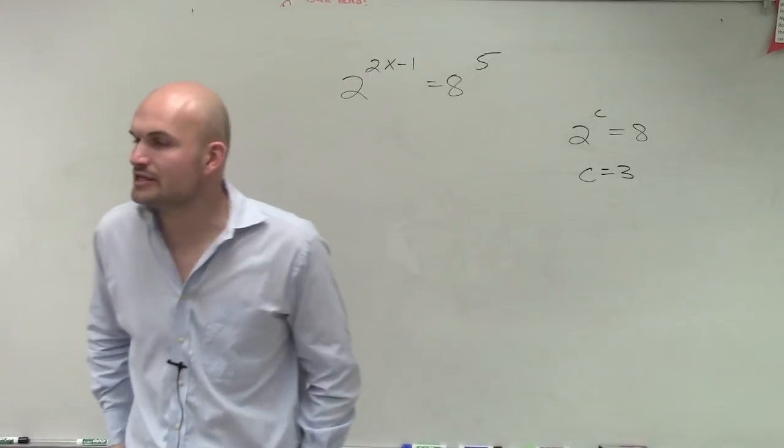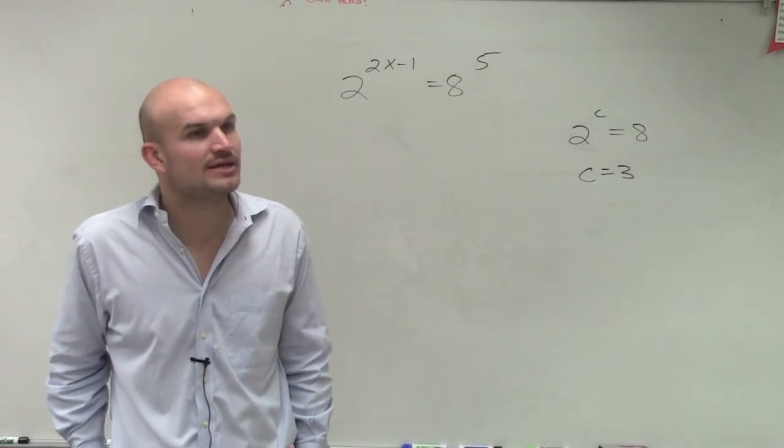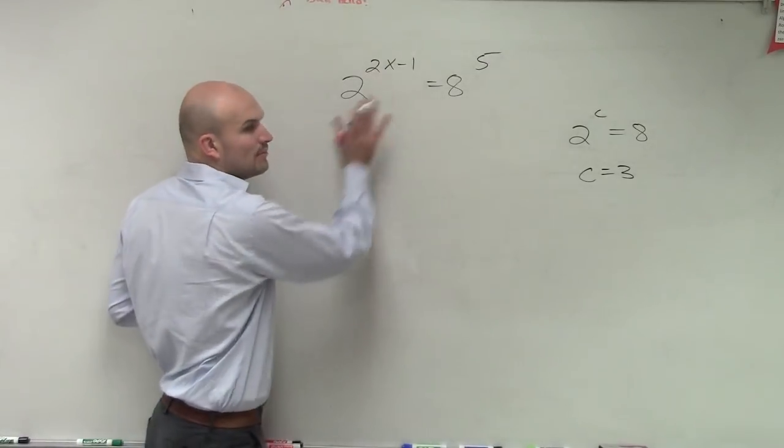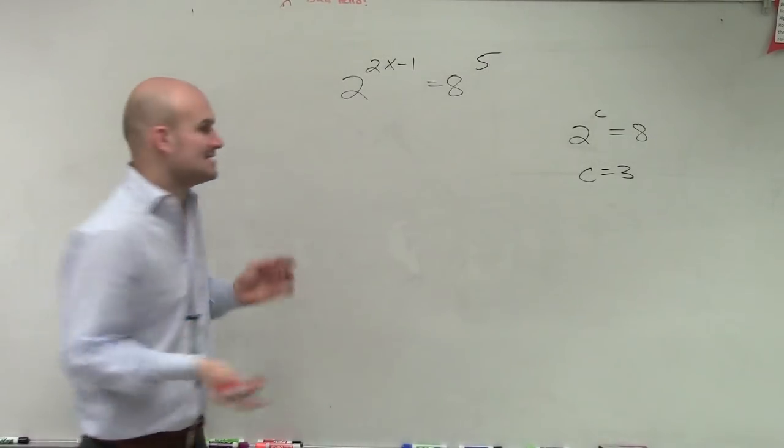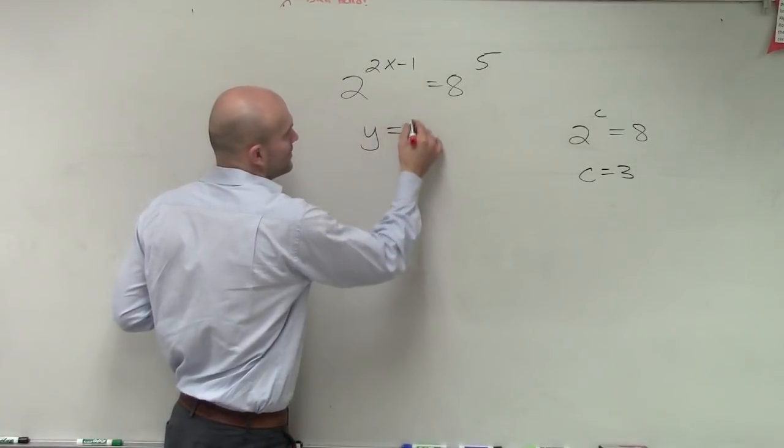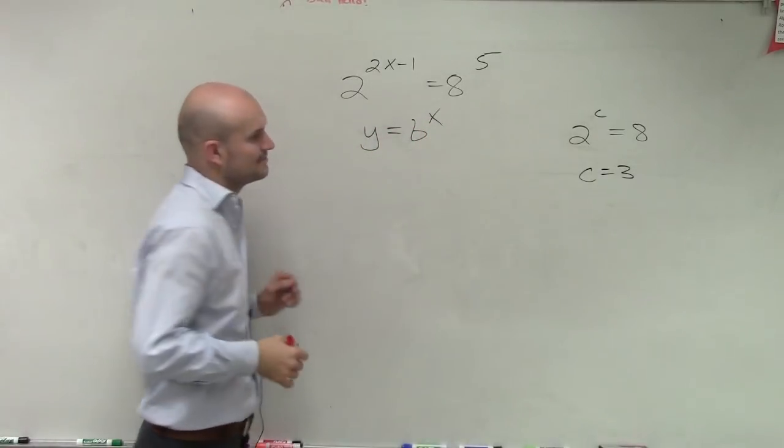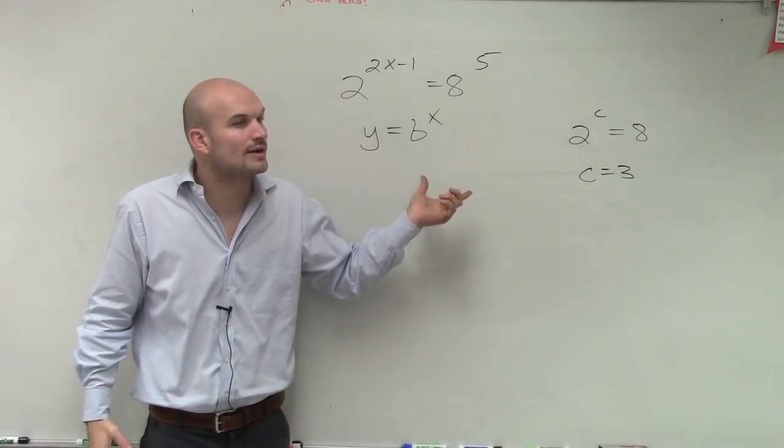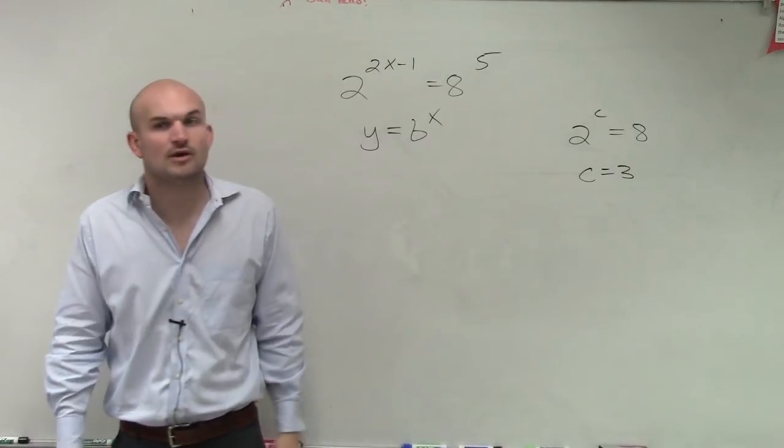So there's actually a notation, ladies and gentlemen, that we can use for this. Let me go and explain it. Let me talk about it a little bit different way. Remember we talked about the graph, right? I said the graph looked like this, y equals b to the x. This was the graph for our exponential function. So we're going to go back to 8.1 real quick.